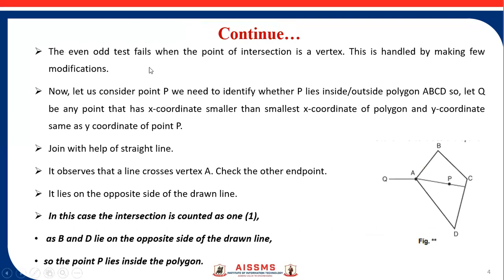This is the case for a simple square polygon. But if the line crosses a vertex of the polygon instead of an edge, then how do we check whether a point is inside or outside? The even-odd test fails when the point of intersection is a vertex. This case is shown in the figure, and it is handled by making a few modifications.